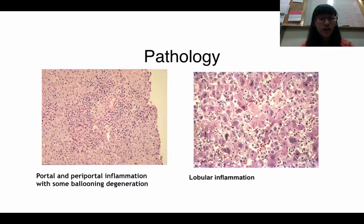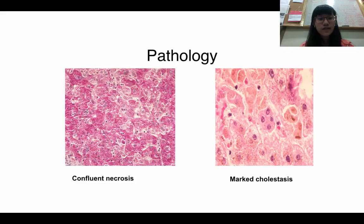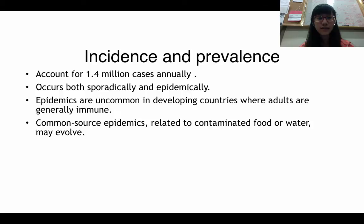Here are pictures showing the effects that Hepatitis A virus has on the liver. You can see inflammation — portal and periportal inflammation with some ballooning degeneration, lobular inflammation, confluent necrosis, which means the cells are destroyed to the point that they undergo autolysis, and marked cholestasis, meaning that bile is prevented from flowing from the liver to the intestine.